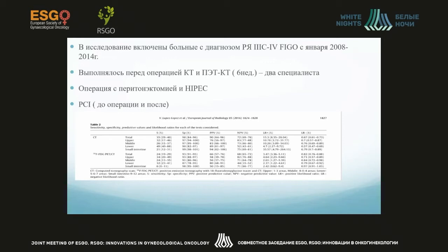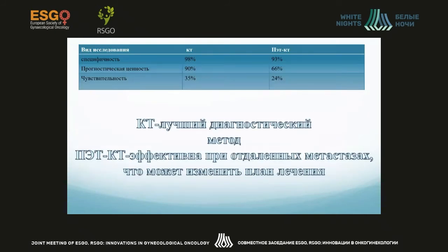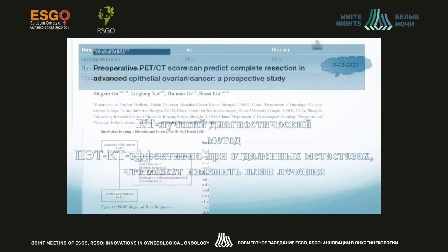Here we see patients graded FIGO 3C–4 from January 2010 to 2014. Two CT experts, working independently of each other, made their conclusions and defined the peritoneal carcinomatosis index. It turned out that CT showed better results compared to PET CT. PET CT is more effective in cases of remote metastasis.